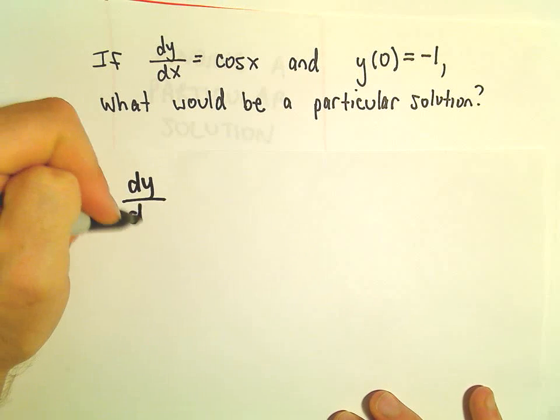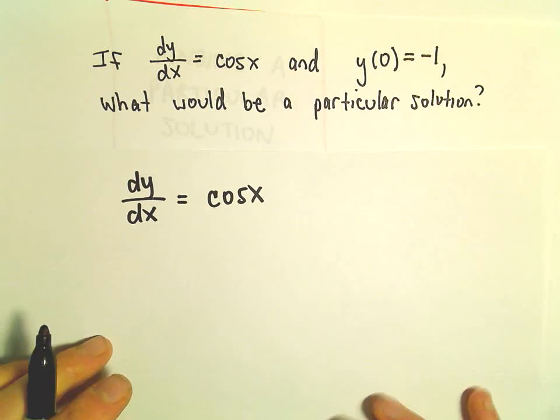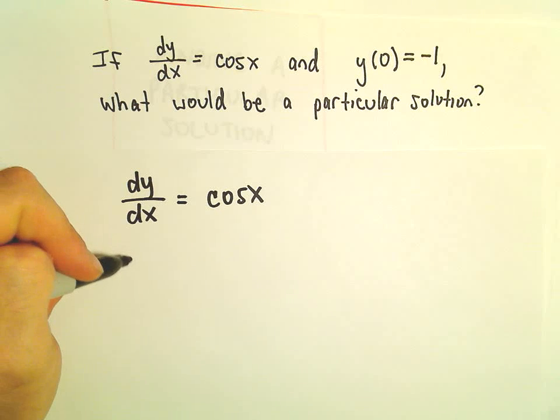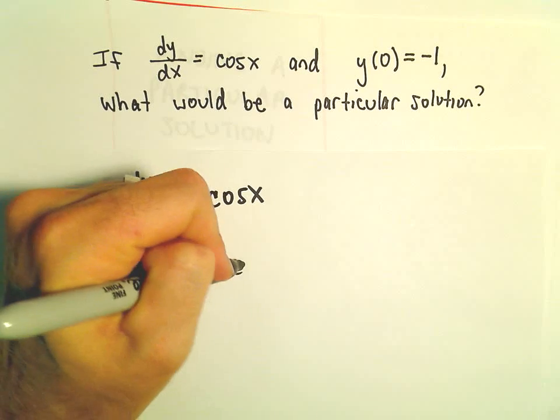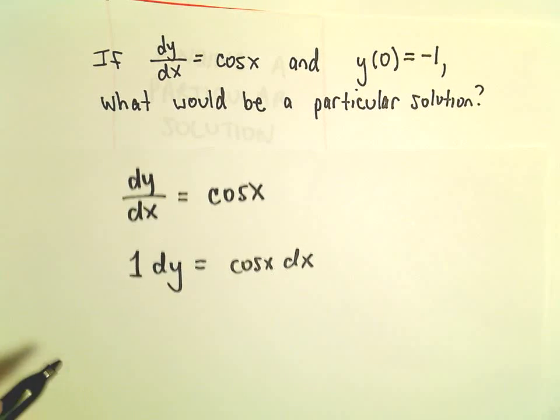So dy over dx equals cosine x. Well, we can separate things out here. So you could think about the left side as being 1 dy equals cosine x times dx, and you can immediately integrate both sides.